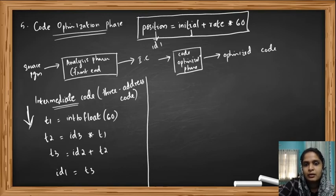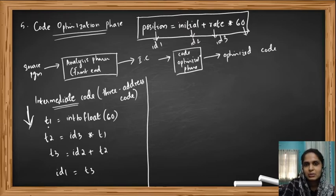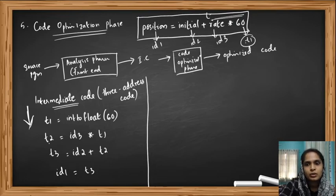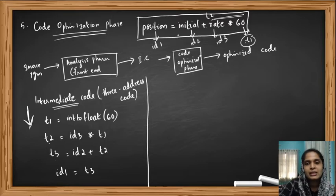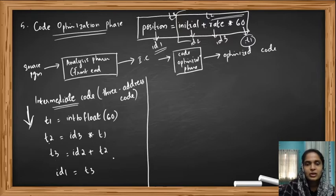The value 60 was an integer, so we converted it to float. The first step was int_to_float(60), storing that value in temporary variable T1. Then we multiplied T1 with ID3 and stored the result in T2, so T2 = ID3 * T1. Then T3 = ID2 + T2. Finally, ID1 = T3. This was our three-address code — our intermediate code.